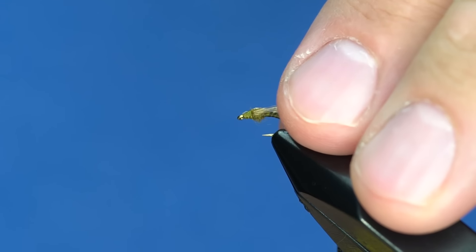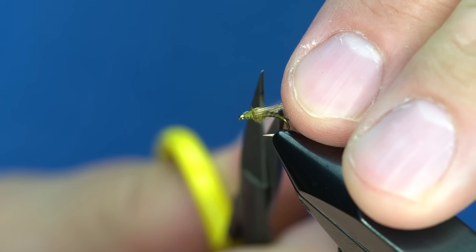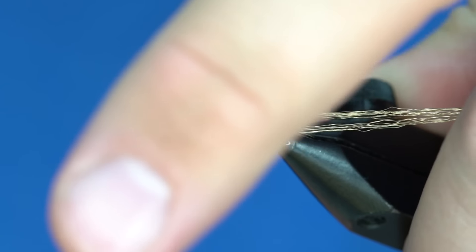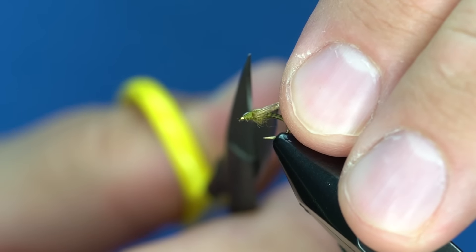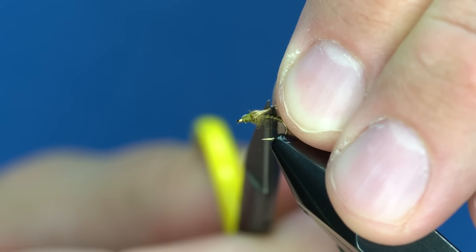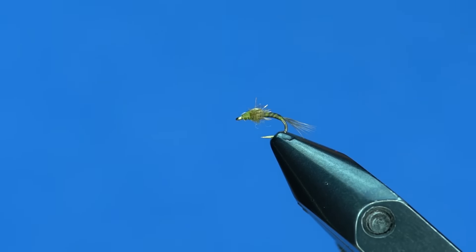Once you've got that tied down, you're going to trim those legs so they reach to not quite the half point of the body, but just a little bit past the thorax. Just like that.